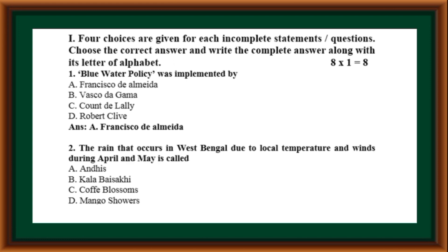The rain that occurs in West Bengal due to local temperature and winds during April and May is called: Kalabaisaki, Coffee Blossoms, Mango Showers. Correct answer is option B — Kalabaisaki.